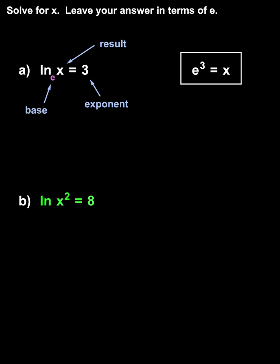ln x means the natural log of x, and a natural log has a base of e. So, converting the equation to exponential form, we have e to the eighth equals x squared.